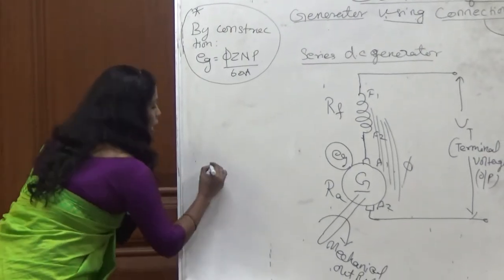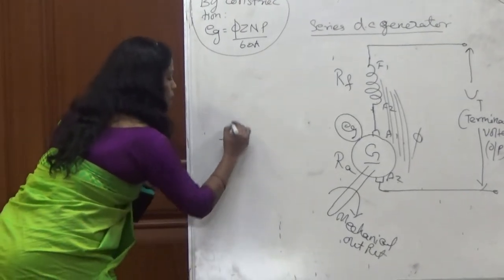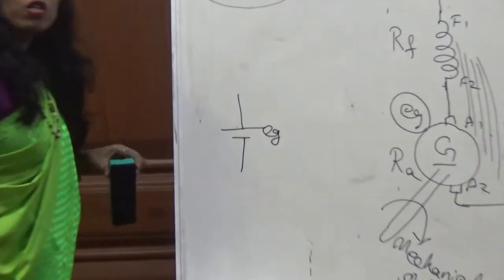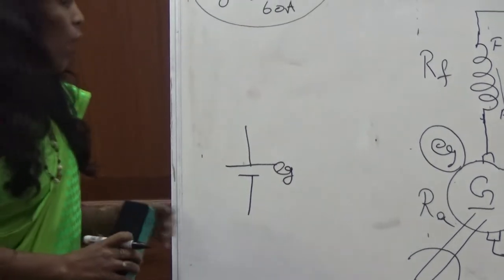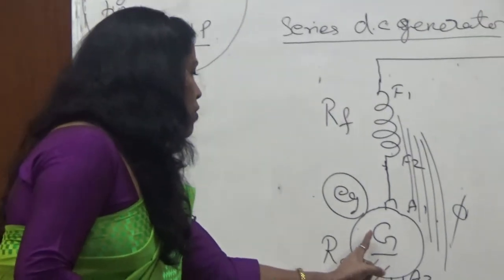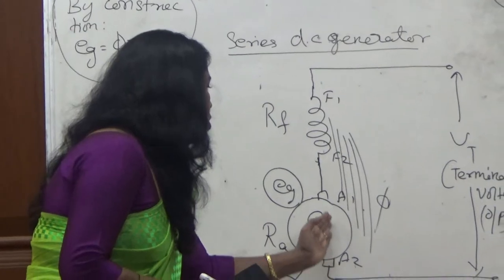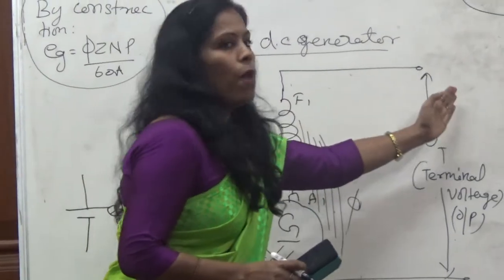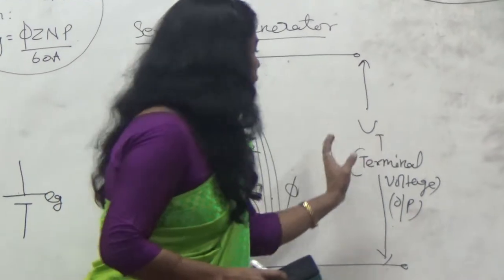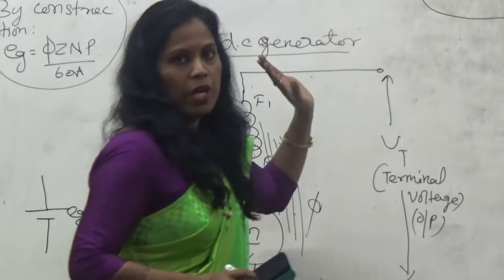This generated EMF is called source. It is a battery. Let me draw this EMF like this, because it is a battery, it is a source. Now from this battery, current will flow, because it is a supply current. Current will flow from the armature to the field and it will come out. Once it comes out, then we take it as an output voltage at the terminal voltage.